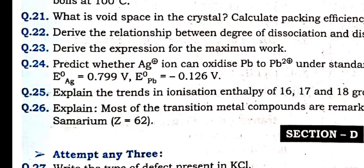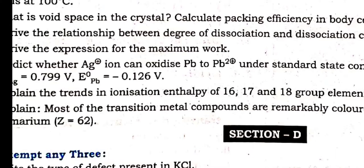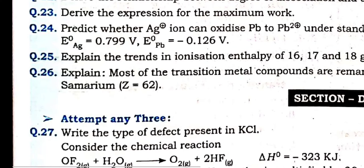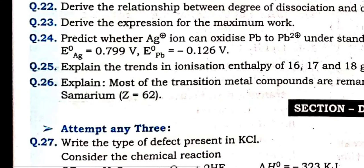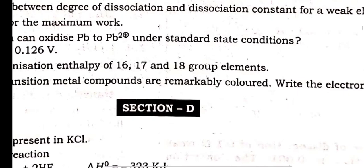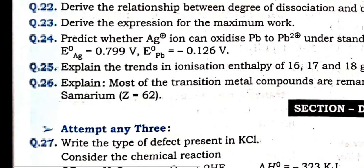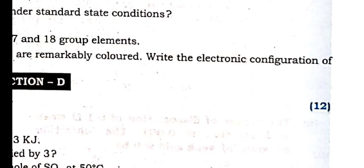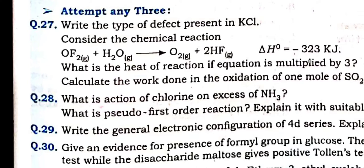Explain most transition metal elements are remarkably colored because of the presence of unpaired electrons or d-electrons. Write the electronic configuration of samarium, atomic number 62 — according to Aufbau principle.